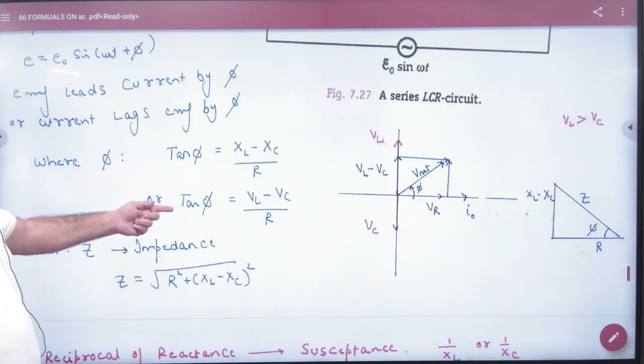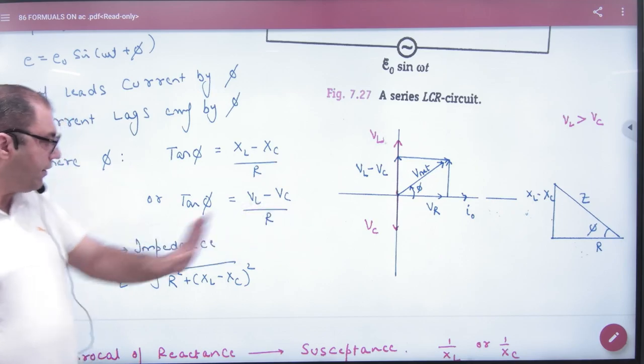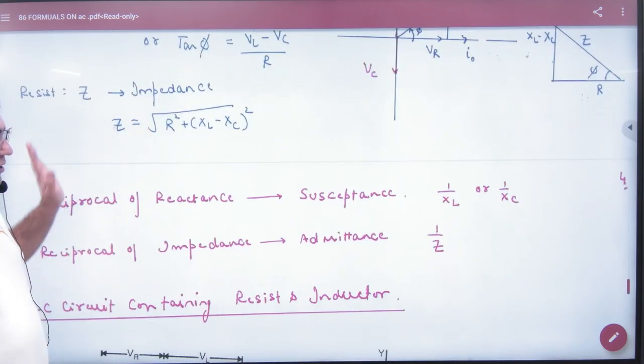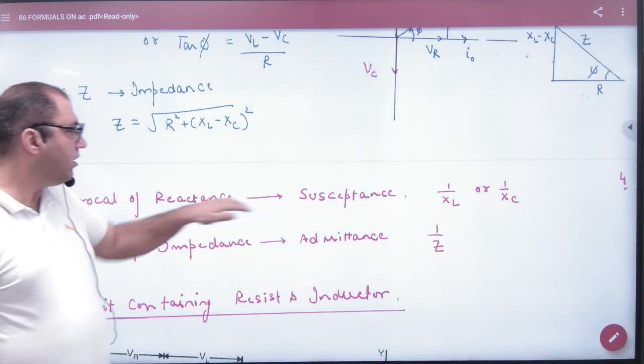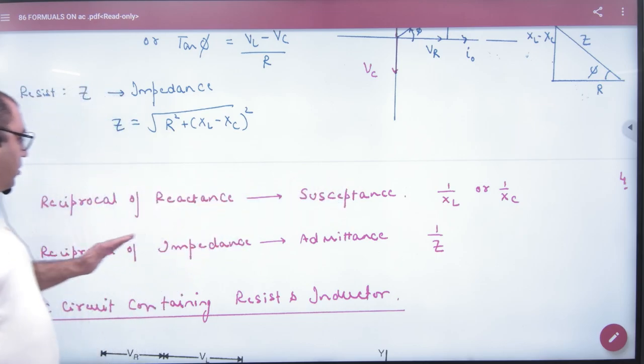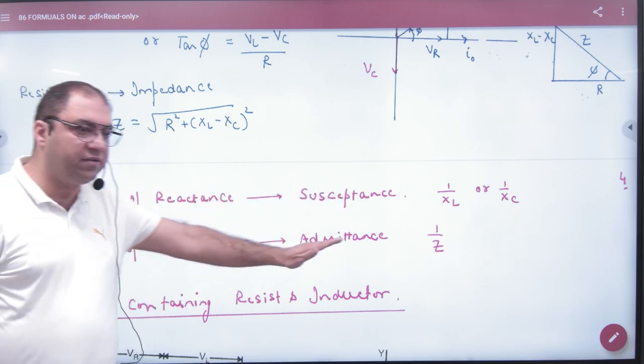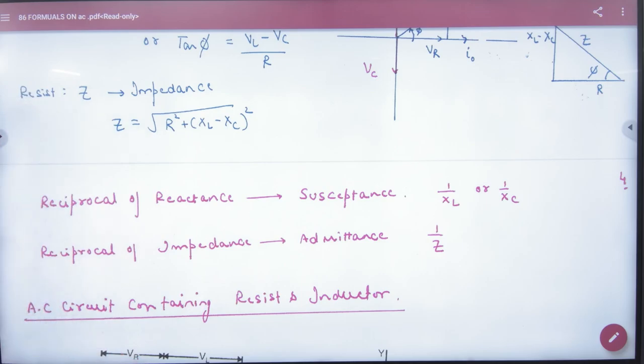We have done the formula, the diagram, impedance triangle, impedance value, susceptance as reciprocal of reactance, and impedance as reciprocal of admittance—1 by Z. This has been done.